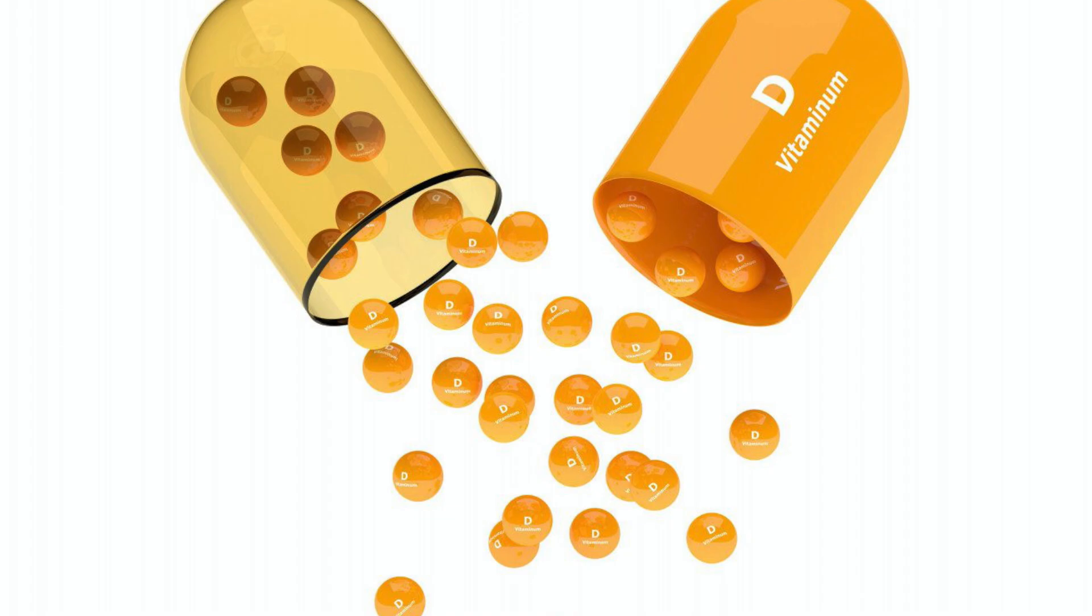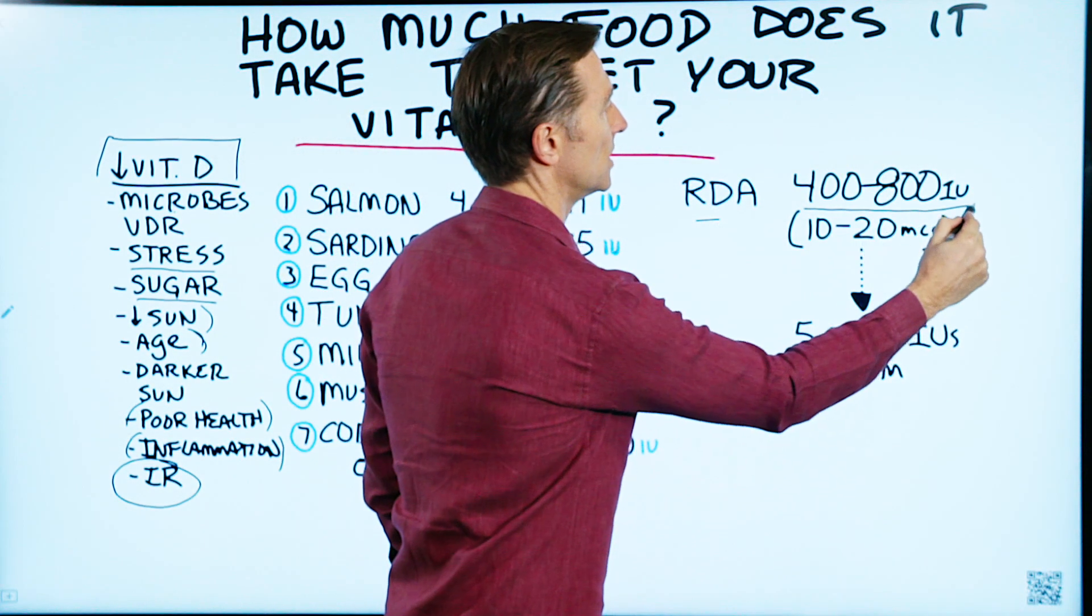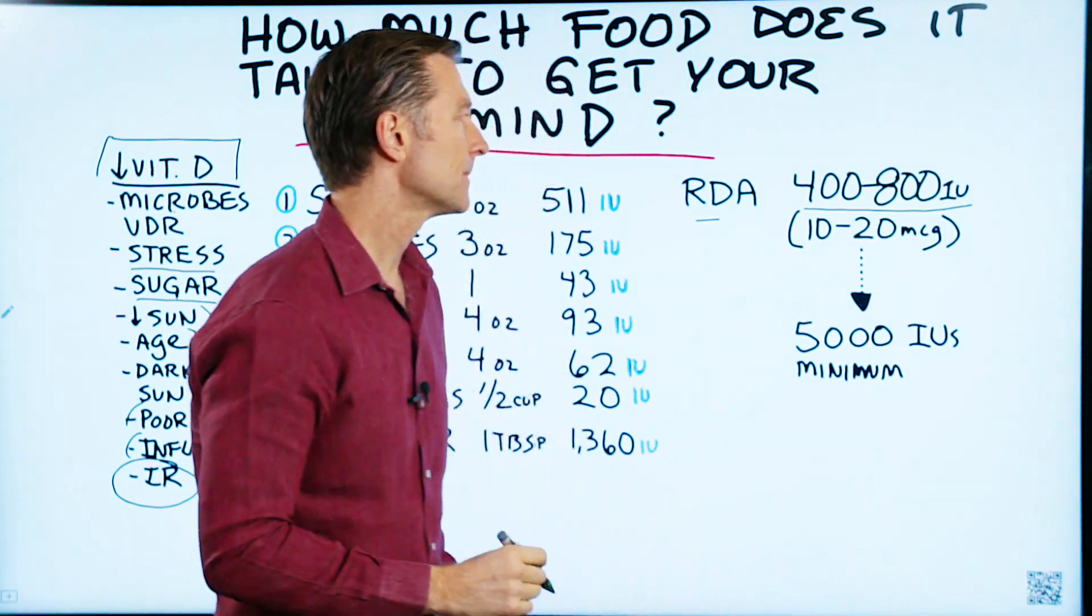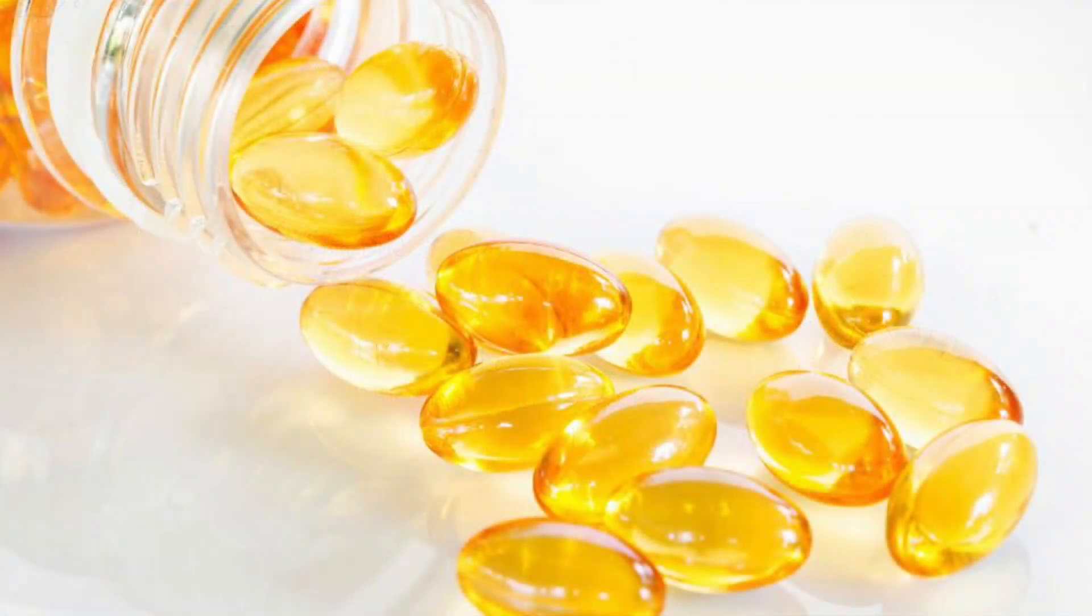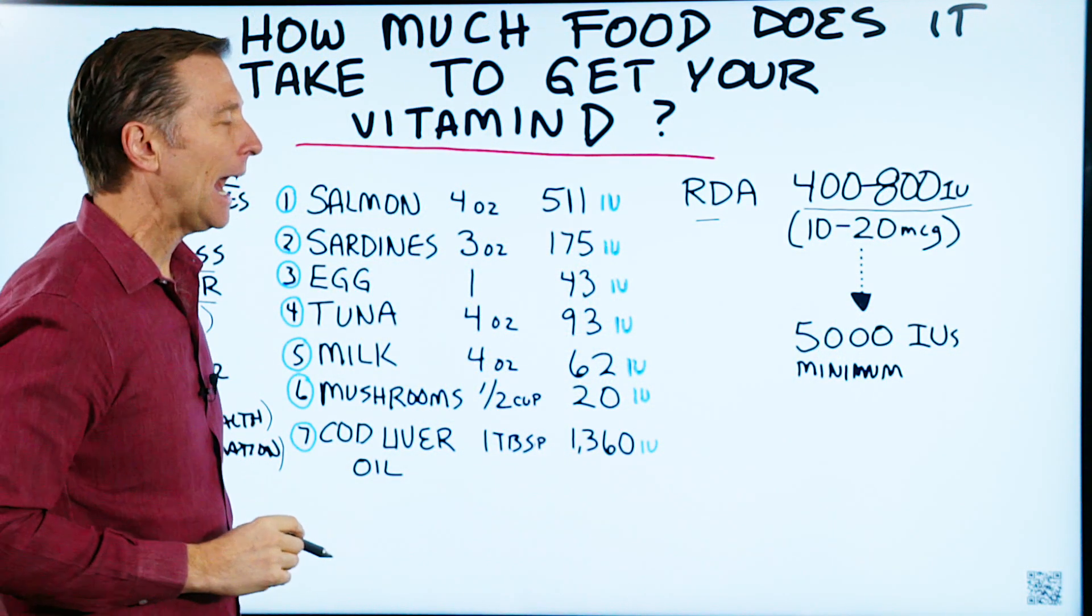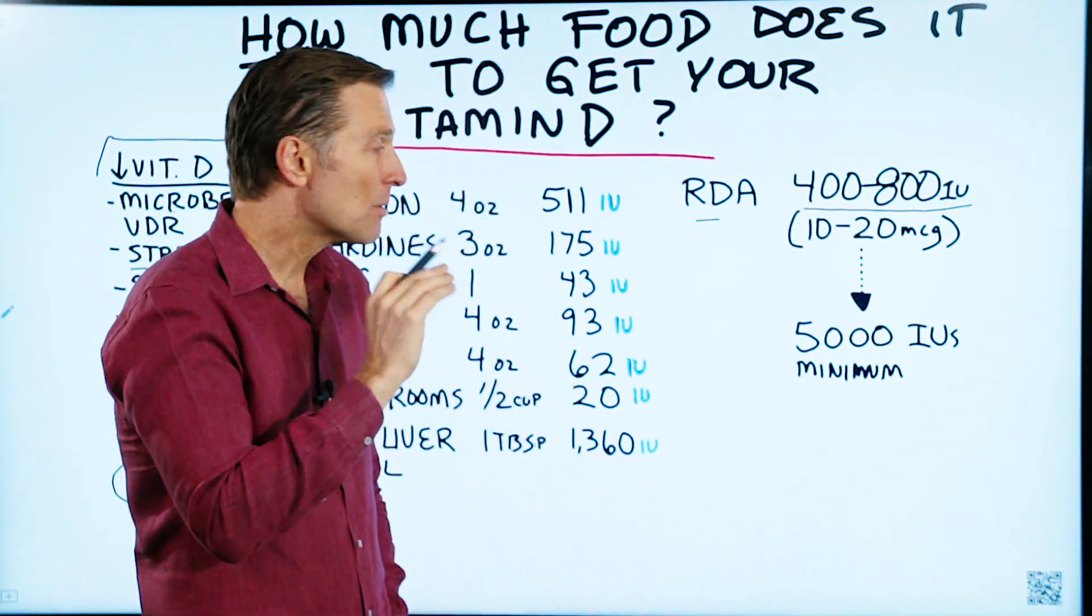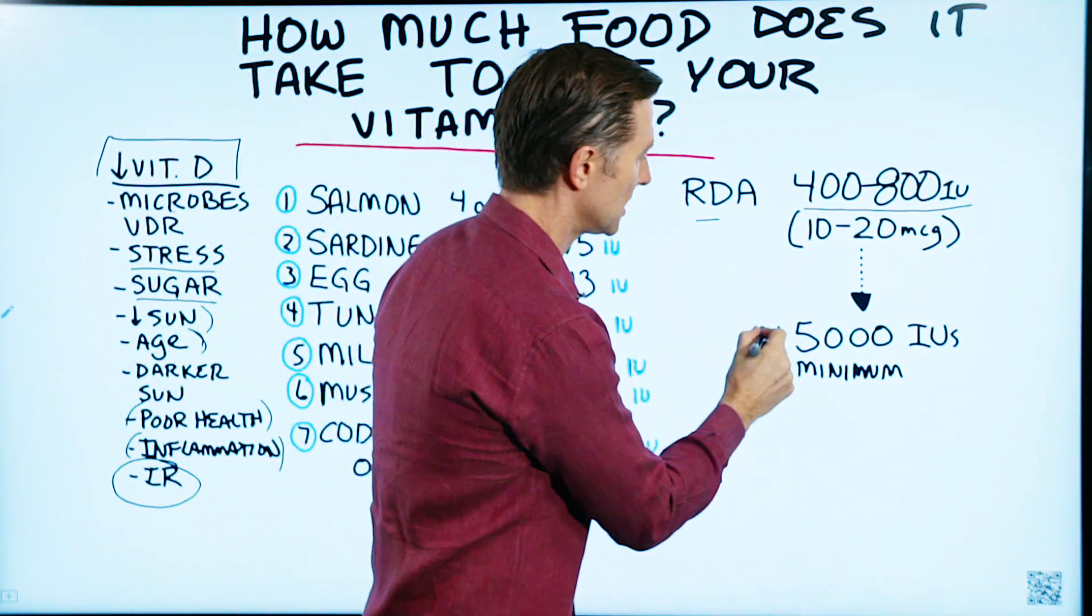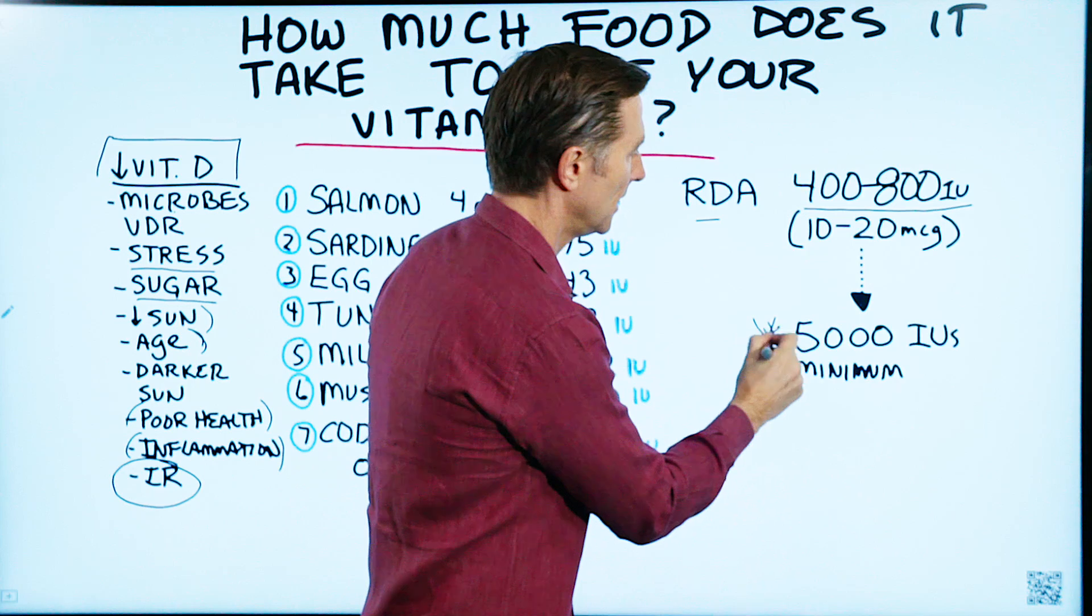Now, if you look up the RDAs for vitamin D, it says 400 to 800 international units. Well, that's 10 to 20 micrograms. I believe those numbers are way, way too low, especially if we factor in all these things right here. I think it should be at a bare minimum 5,000 IUs per day. And that's at a minimum.